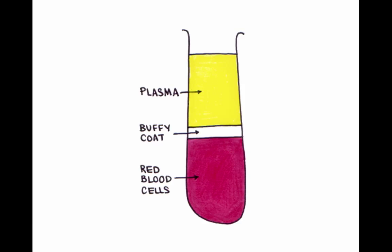This is a very brief animation to talk you through the composition of blood. This picture represents a test tube of blood that has been centrifuged. It shows the three main components.